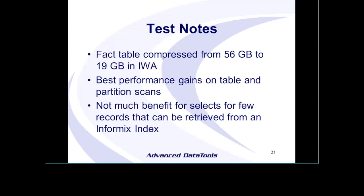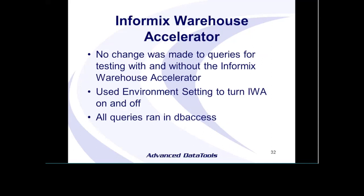In the test we ran, our fact table, which is 56 gig, is compressed down to under 20 gig within the accelerator, so it all sits in memory nicely. You see the best performance gains when you're scanning a table, and you don't see much benefit when you're just returning a few records and everything's indexed. Some of the first tests I did were all indexed, but without using hash joins I was doing many millions of index reads — some tests I killed after 25 hours. That's why those hash joins are in there. We made no changes to the queries between the two examples — it's just that environment setting saying whether to offload the query to the accelerator or not.